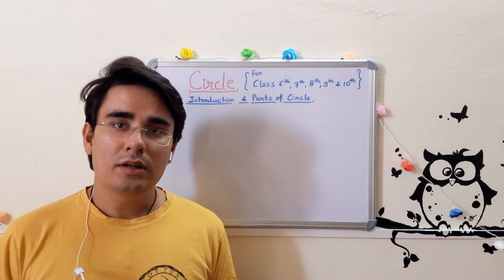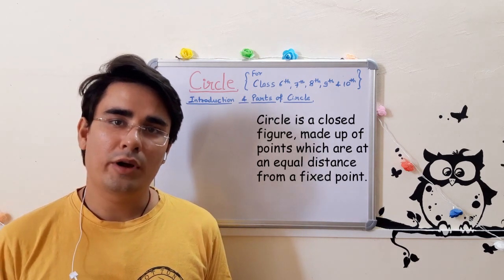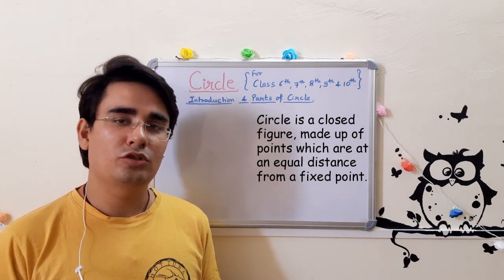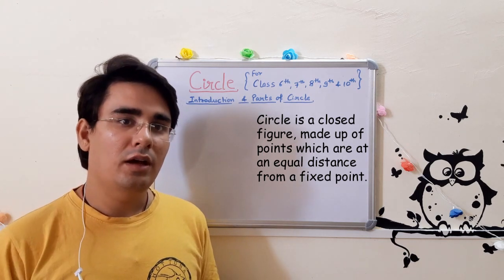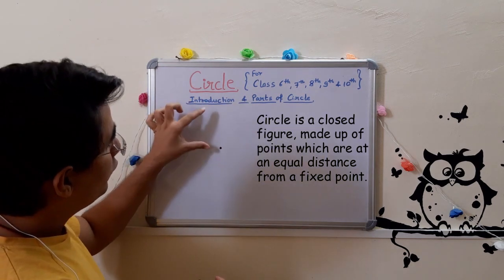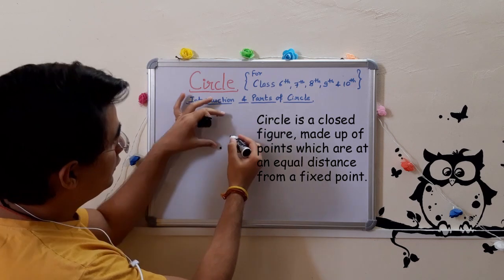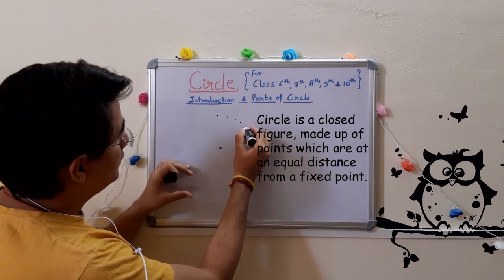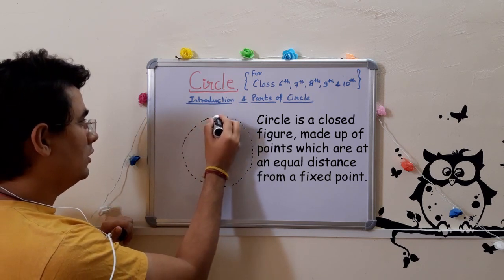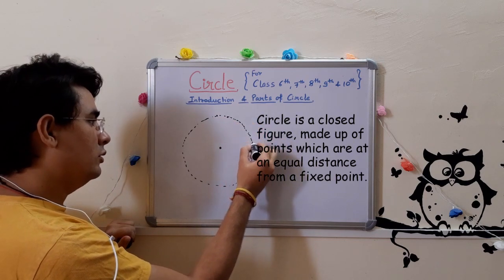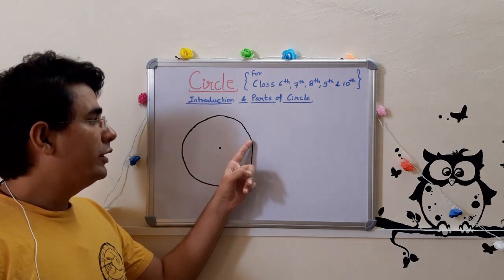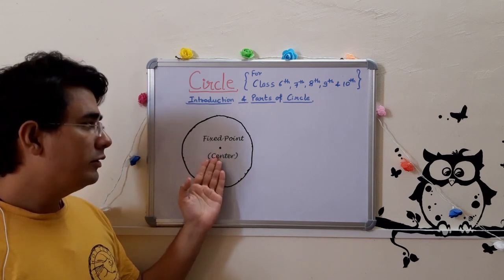Let us first define it. Circle is a closed figure made up of points which are equidistant from a fixed point. This means that the fixed point should be at the center. That is known as the center. And from that, this is the fixed point. If I take 4 cm gap here and another 4 cm gap here and keep doing this, you will be getting a proper circle.